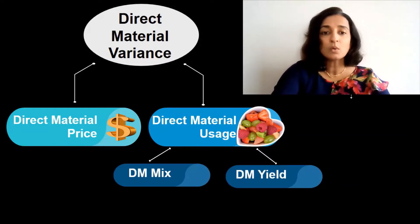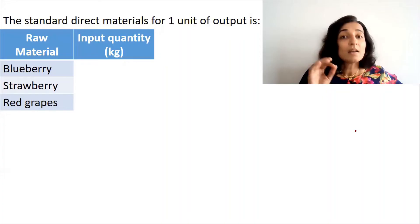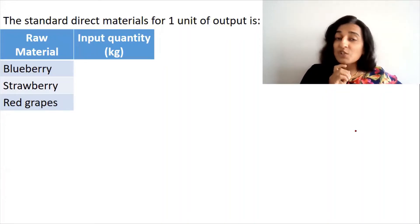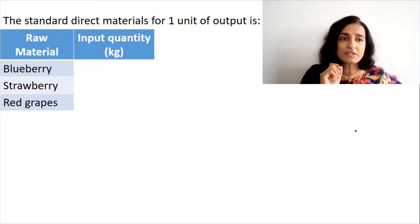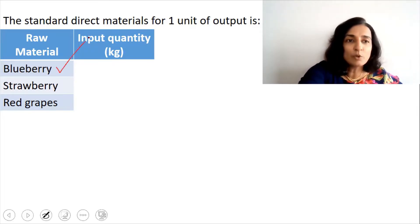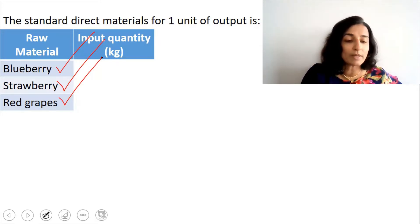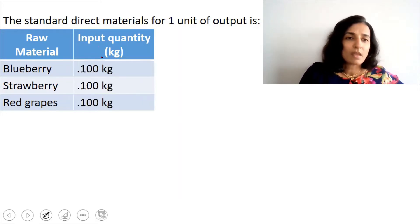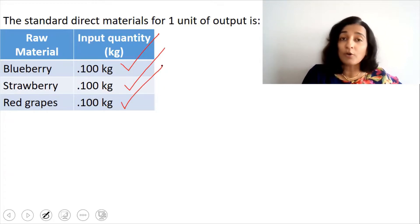In this session, we are going to study what the direct material mix variance is. The product we are going to manufacture is the fruit punch, which requires three raw materials: blueberry, strawberry, and red grapes. For making one fruit punch, the standard quantities are 0.1 kg of blueberry, 0.1 kg of strawberry, and 0.1 kg of red grapes.